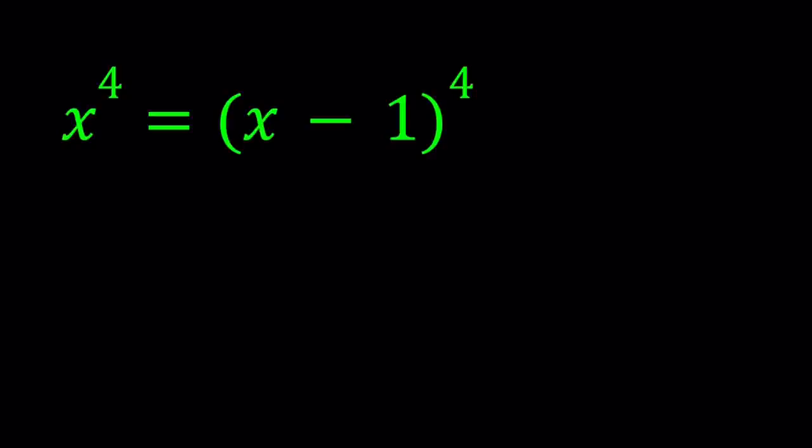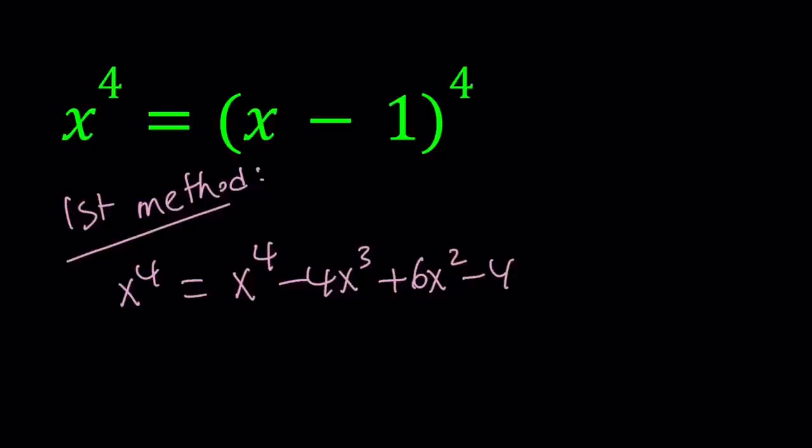And that brings me to my first method. So for the first method, we're going to expand. We have x to the fourth and on the right hand side we have x minus one to the fourth power. How can I expand that? By using the binomial theorem. It becomes x to the fourth minus 4x cubed plus 6x squared minus 4x plus one.